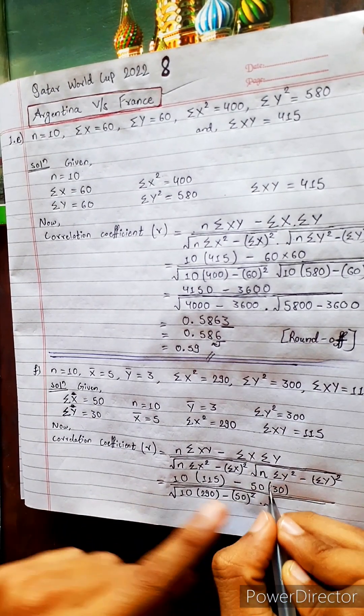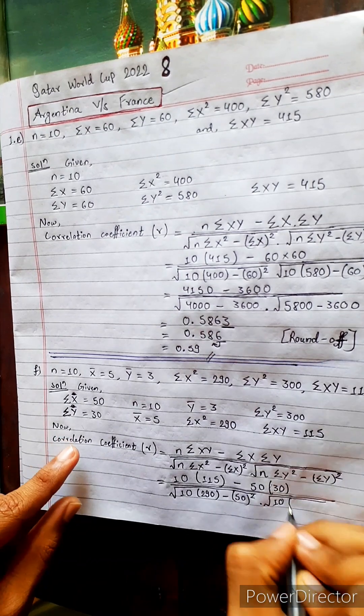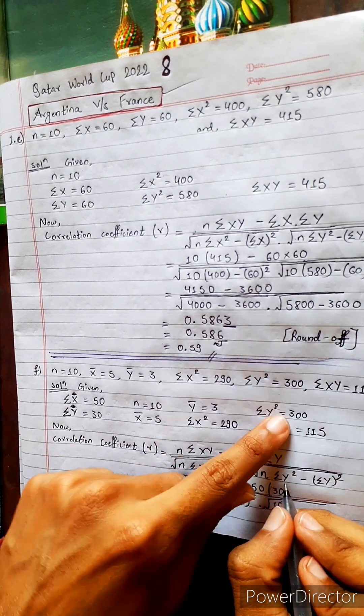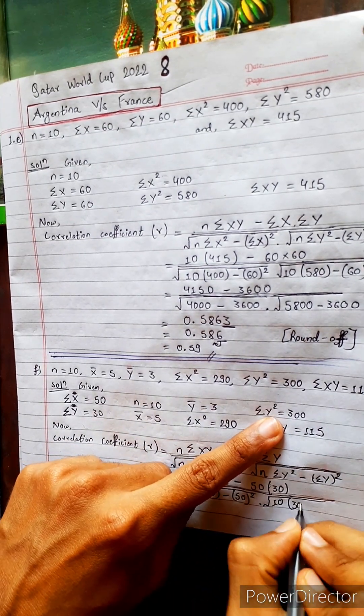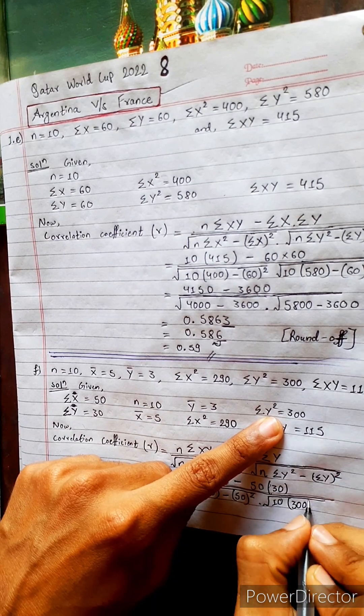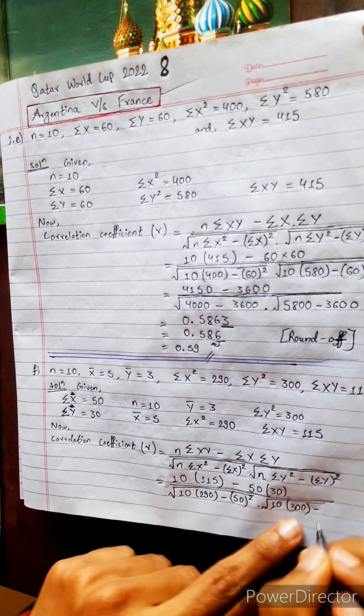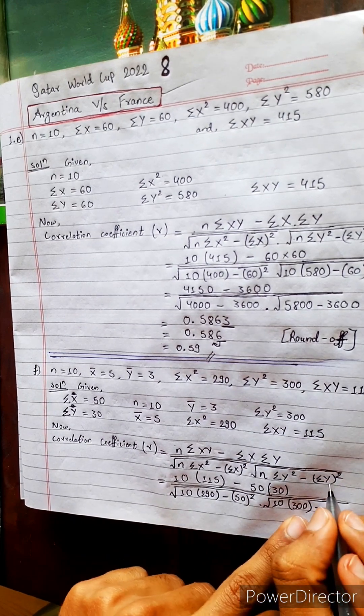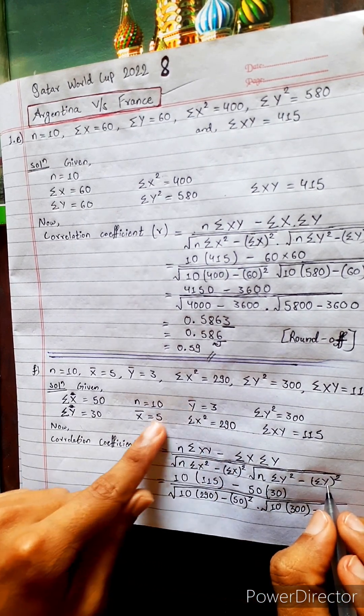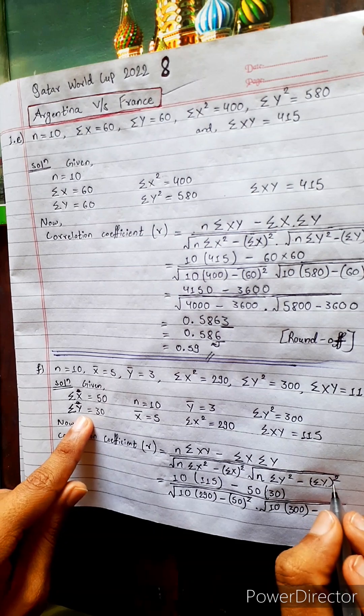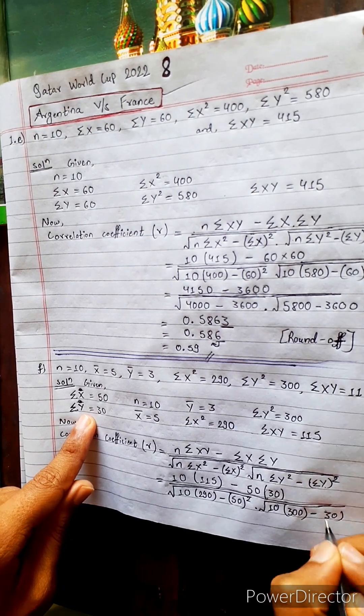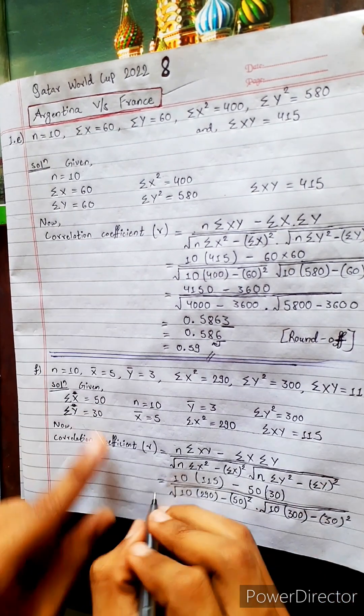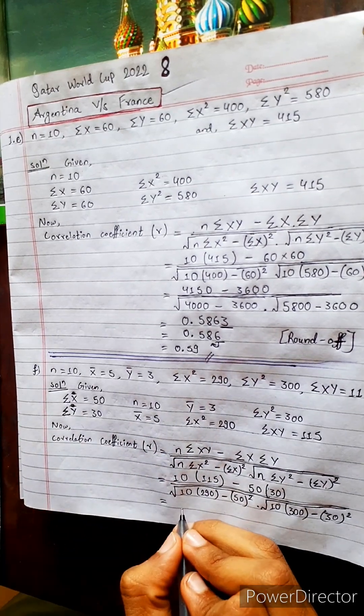And look here, 10, summation y square here 300. Oh my god, 300. Oh no, no need to do all square here. This is summation y square, everything. Now summation y 30, 30, yes 30 square. Now answer in one shot.